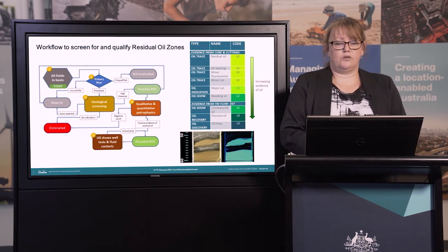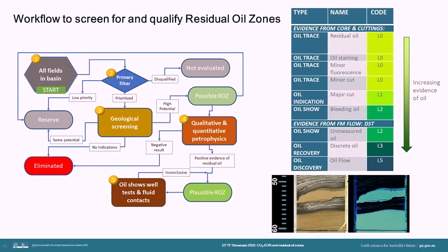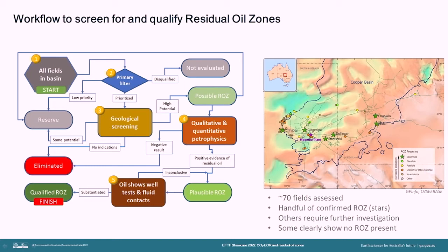The next step was to look at where we had plausible residual oil zones determined from petrophysics, to actually match that interpretation with evidence of oil in the well. So we looked at shows and formation tests, and also fluid inclusions in geochemistry where we had those available. We used Geoscience Australia's shows classification scheme, and you can see here a lovely image of fluorescing core that indicates the presence of oil. We ended up with assessments for around 70 fields. Confirmed residual oil zones are represented by the green stars on the map, and the other fields are designated as plausible, possible, unlikely, or no evidence of a residual oil zone.